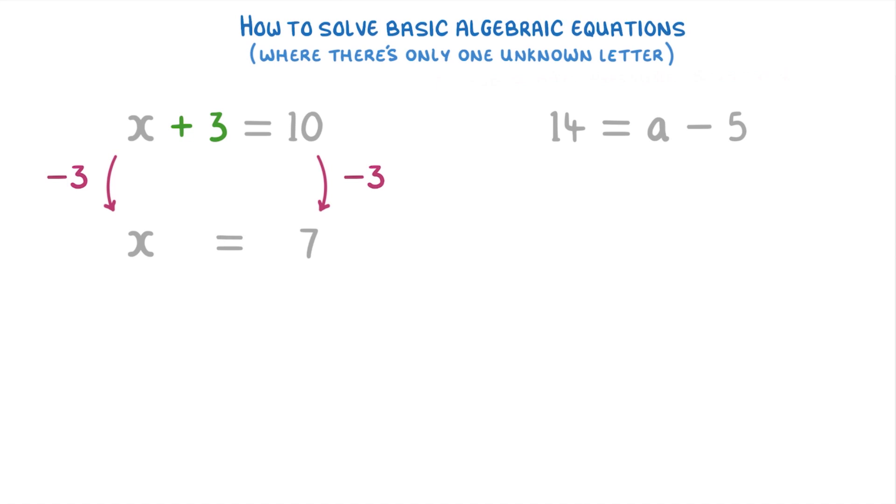Let's have a go at this second one where 14 is equal to A minus 5. To get the A by itself, we need to get rid of this minus 5 term, so we're gonna have to do the opposite and add 5. But remember we have to add 5 to both sides. On the left this gives us 14 plus 5, which is 19, and on the right the minus 5 and the plus 5 cancel each other out, so we're left with just A, which means that A must equal 19.